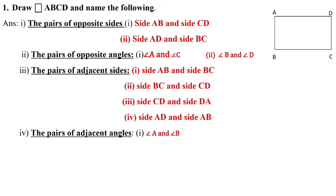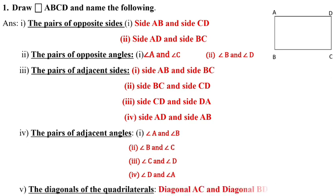The pair of adjacent angles: angle A and angle B, angle B and angle C, angle C and angle D, angle D and angle A are adjacent angles.